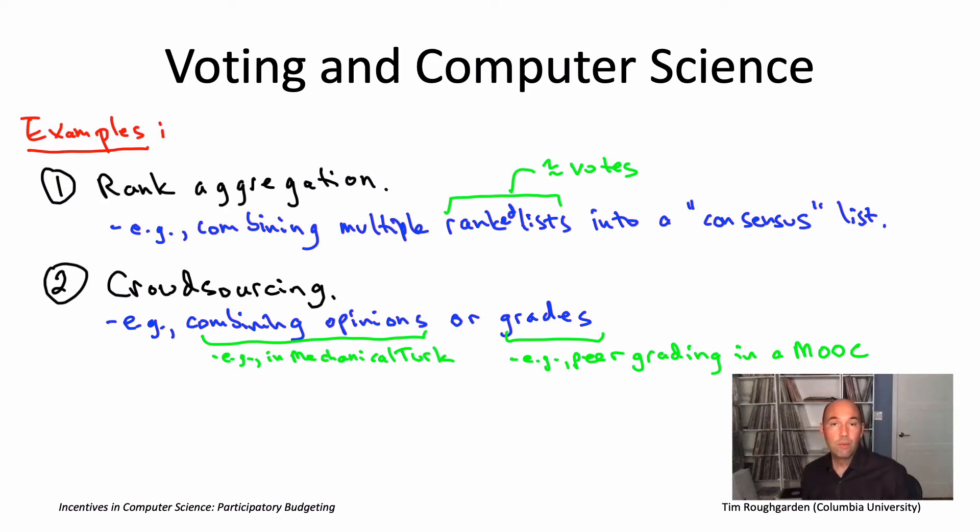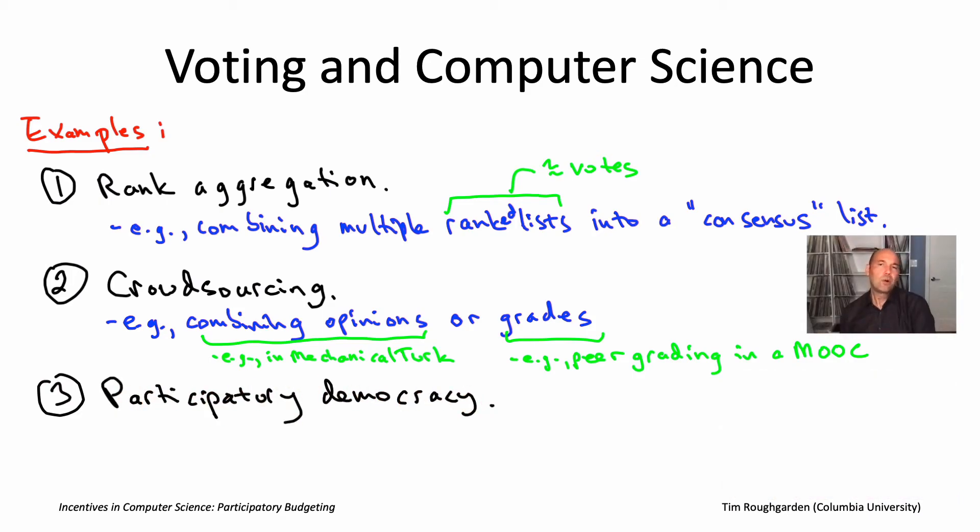And the final example I want to mention, and in fact, what's really going to set the stage for the rest of this module is participatory democracy. In participatory democracy, the goal is to get more people involved in government decisions, especially at the local levels. You might want to think about like a district or like city planning. And you could imagine involving lots of citizens in various decisions. So far, people have focused primarily on budgeting decisions, like where to spend a budget across different public projects. And that's exactly what we'll be drilling down into in the next few slides.